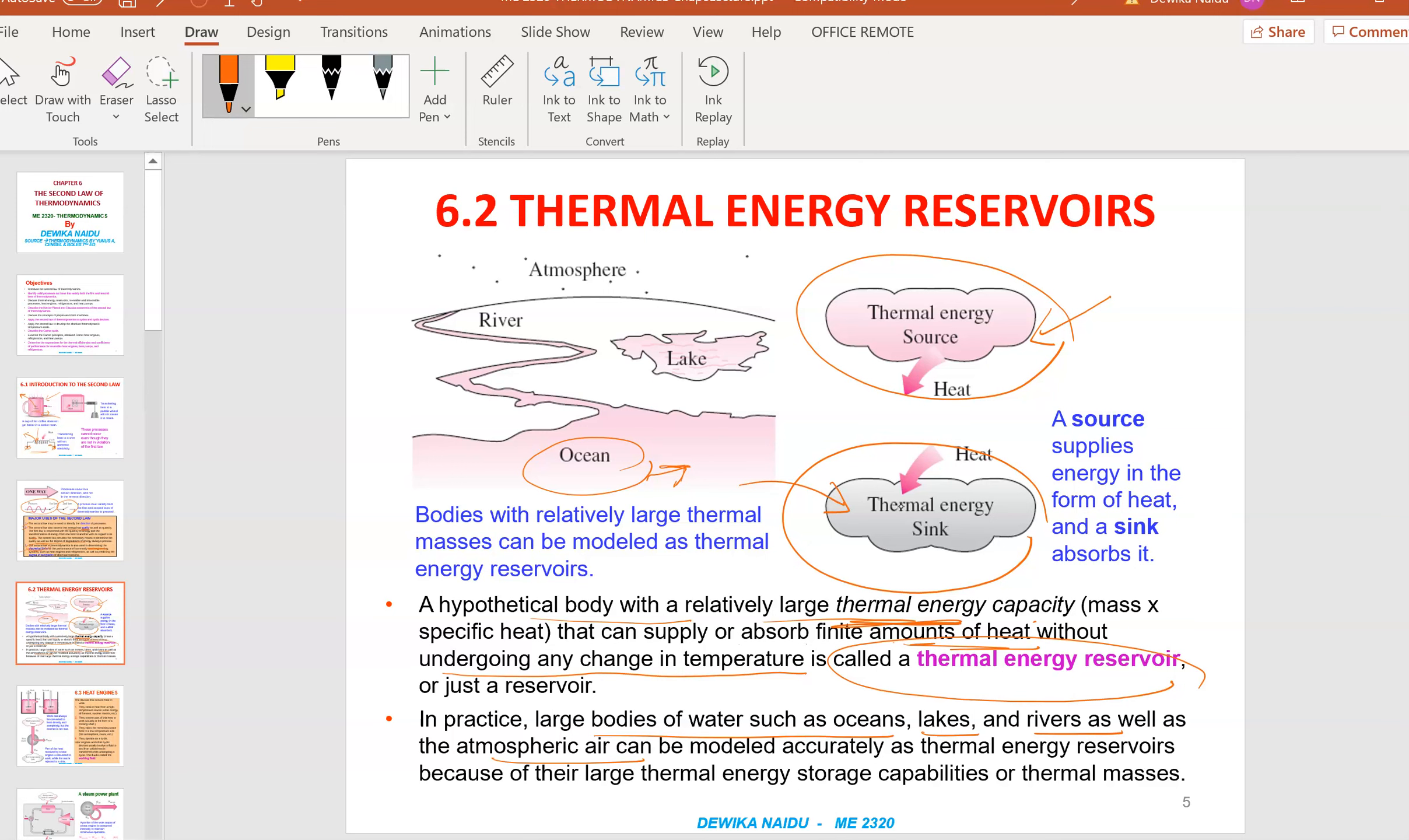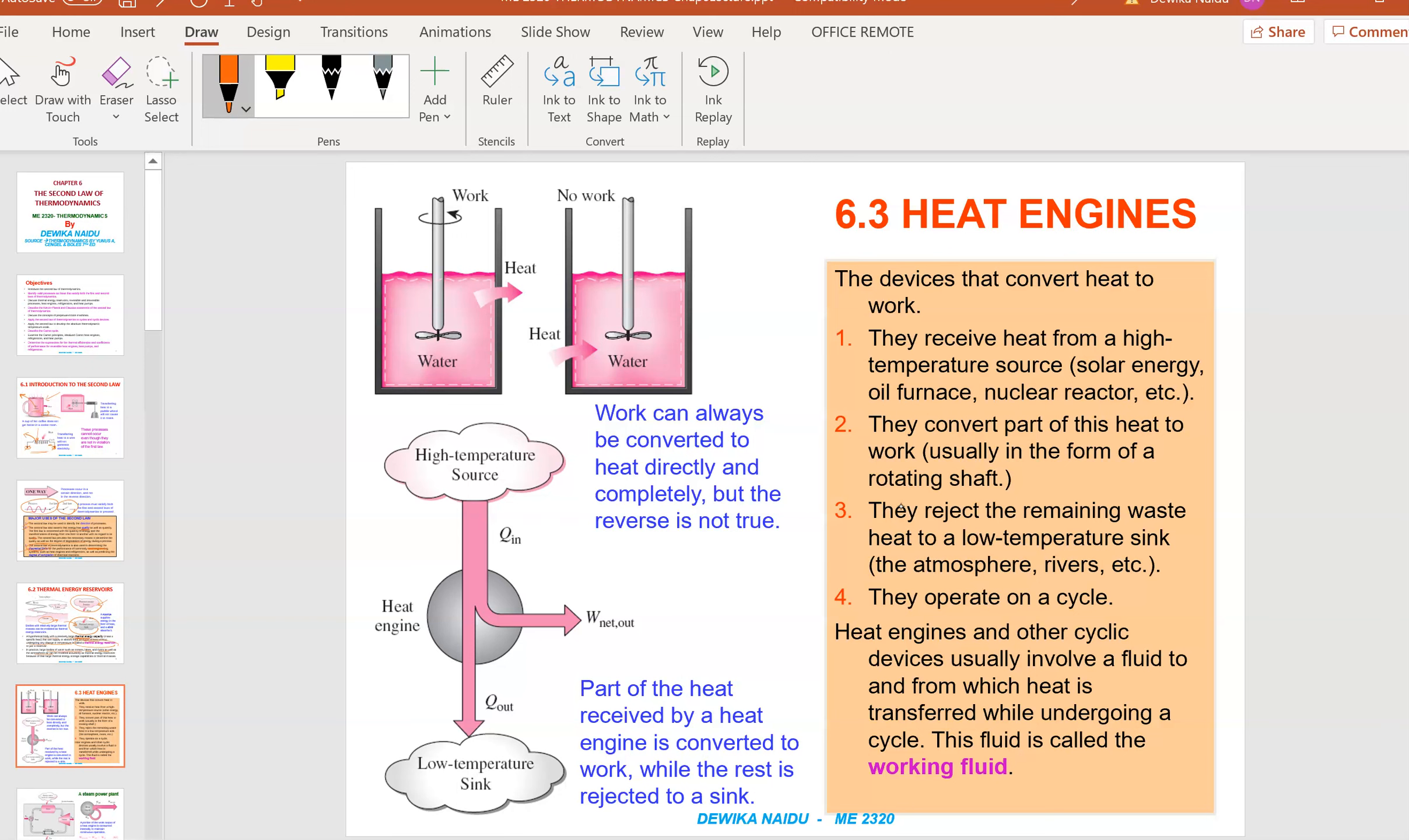Now let's move on to Example 6.3 on heat engines, textbook page 278. What is a heat engine? It converts heat to work. From a high temperature source, you have Q in to the heat engine, and it produces work, and the balance heat is being released to the sink.